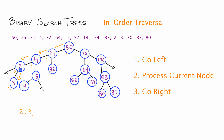Now we're back at node 4, which has only completed step one. So for node 4 we move to step two — process current node. We print the key value of 4. We mark that step two is done. Now we go to step three — go right. We put a dot showing we're doing step three, and draw an arrow traversing to node 4's right child, which brings us to node 15.